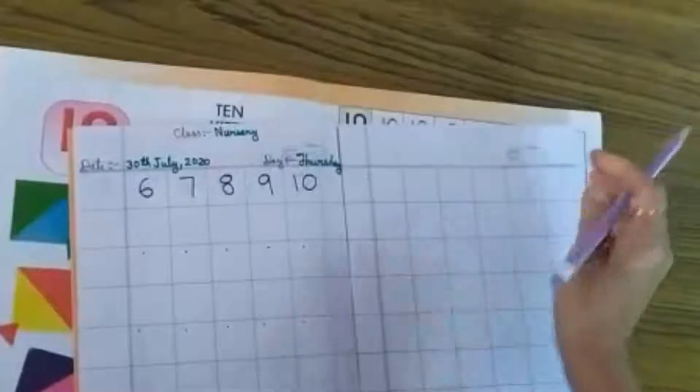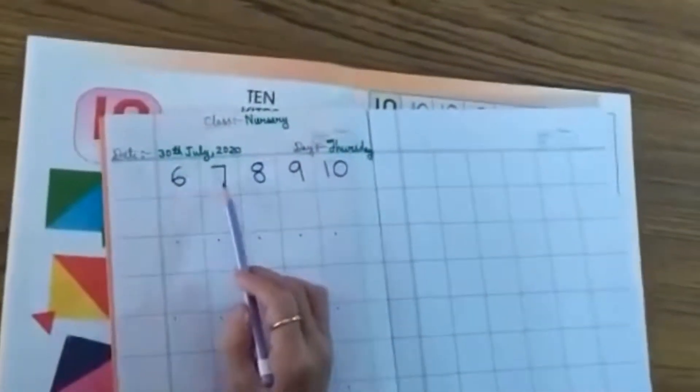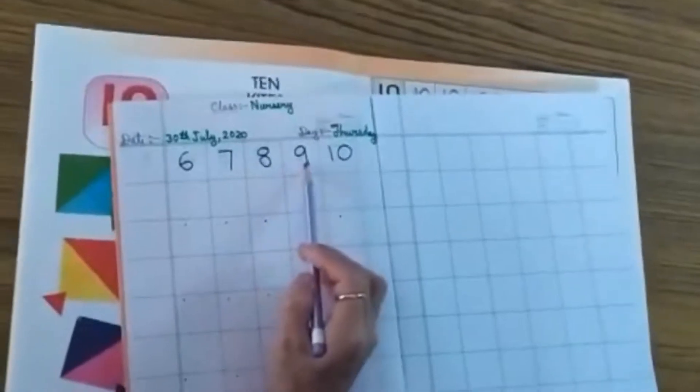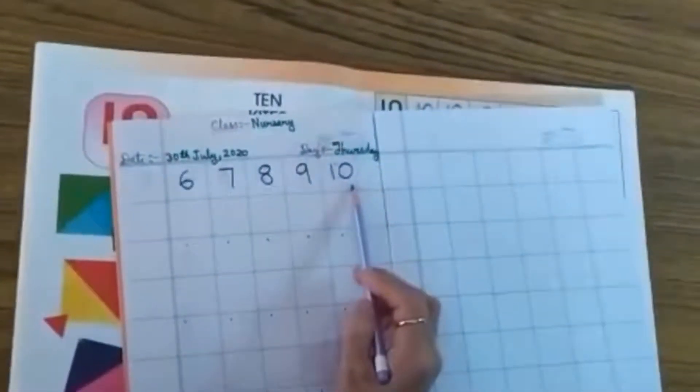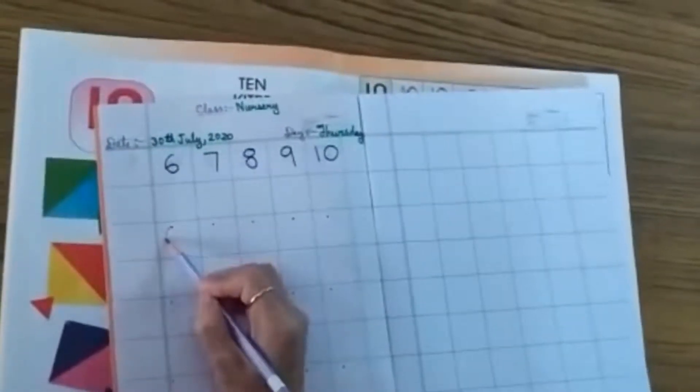And in Maths copy you write the numbers 6, 7, 8, 9 and 1, 0, 10. Here some dots.